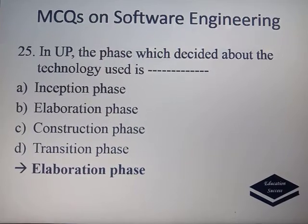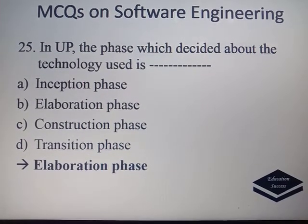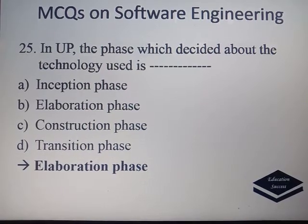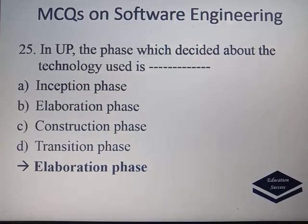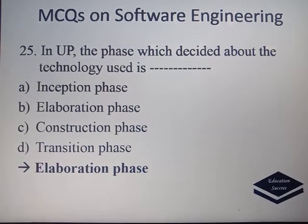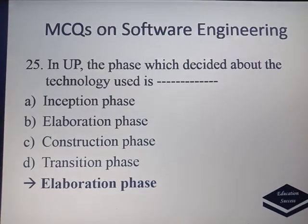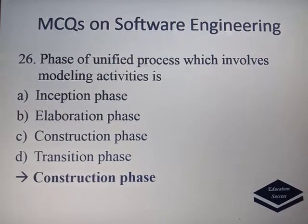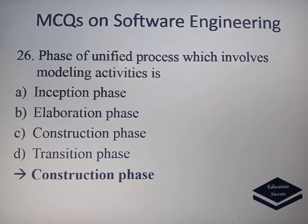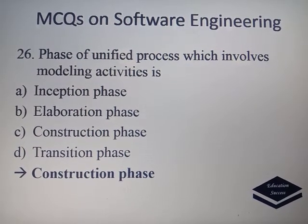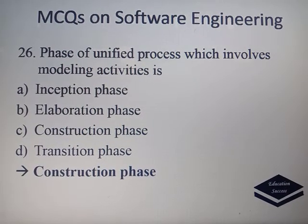In the Unified Process (U.P.), the phase which decides about the technology to be used is the Elaboration Phase, where we decide which technology will be used for the software. The phase of the Unified Process which involves modeling activities is known as the Construction Phase — in the construction phase, it involves modeling activities.